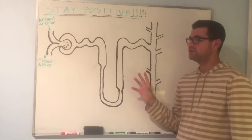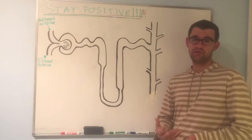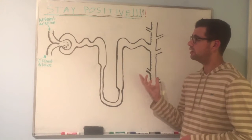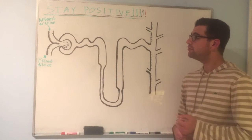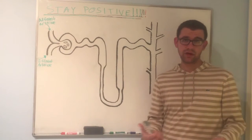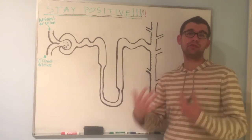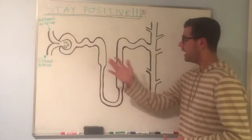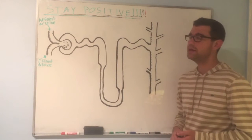The nephron can be understood as the basic subunit of the kidney. You have about a million nephrons per kidney. And the main function of the nephron, or at least one of its functions, is to filter out your blood — filter out the stuff that we don't want in our blood — and release it as urine, as pee.